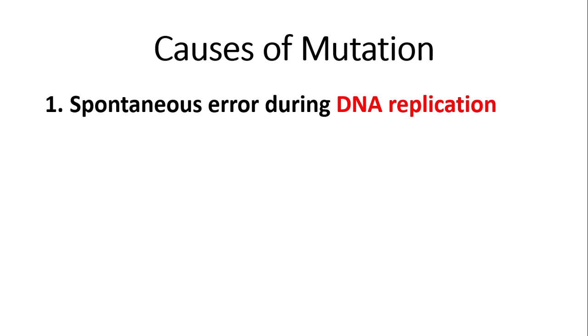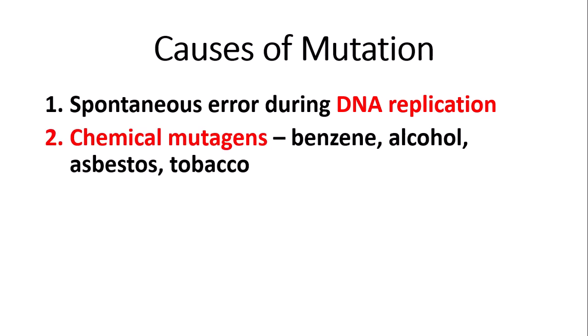Now you just need to be familiar with some of the causes of mutation. The first is spontaneous error during DNA replication — so the wrong base might be copied into the newly replicated DNA strand, or something might be deleted or duplicated. The second cause is chemical mutagens.